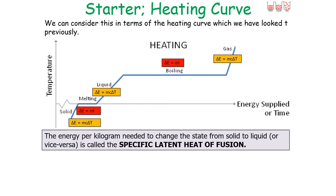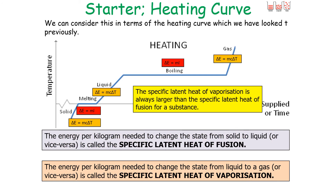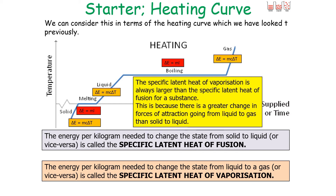The energy per kilogram needed to change the state from a solid to a liquid, or vice versa, is called the specific latent heat of fusion. The energy needed per kilogram to change the state from a liquid to a gas, or vice versa, is called the specific latent heat of vaporization. The specific latent heat of vaporization is always larger than the specific latent heat of fusion, because there is a greater change in the forces of attraction going from a liquid to a gas compared to from a solid to a liquid.